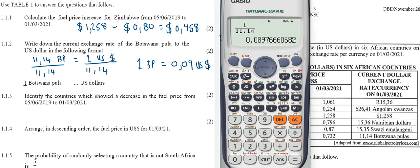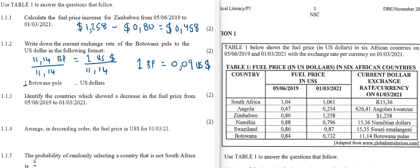Question 1.1.3: Identify the countries which showed a decrease in fuel price from 2019 to 2021. Let's look at these countries one by one. South Africa increased, Angola decreased, so Angola is the first country. Zimbabwe increased, Namibia decreased, so Namibia is the second country. Swaziland increased. Finally, Botswana also decreased, so Botswana is the last country, the third country which showed a decrease in fuel price.